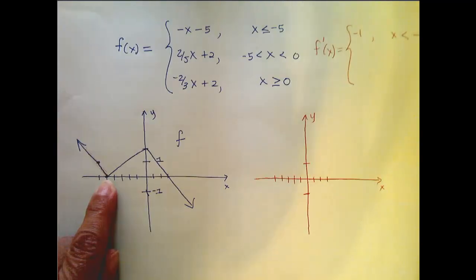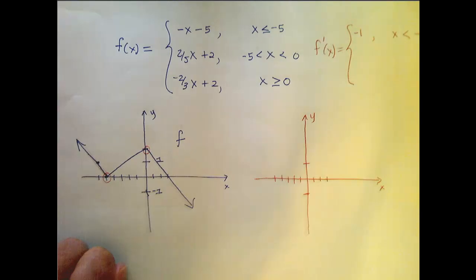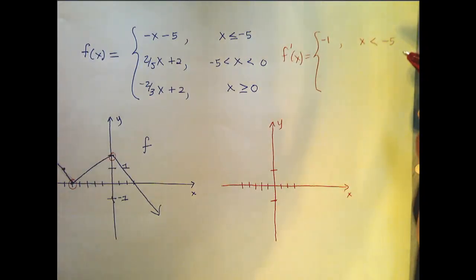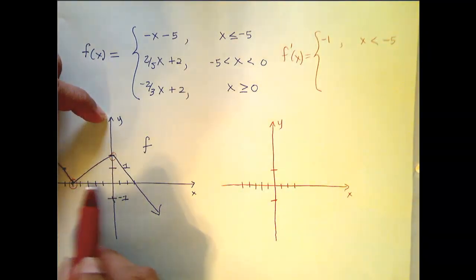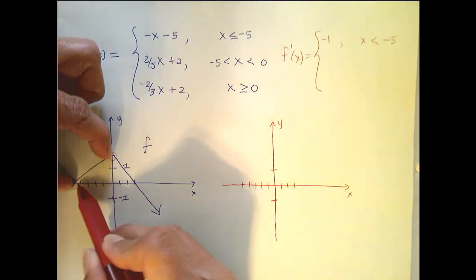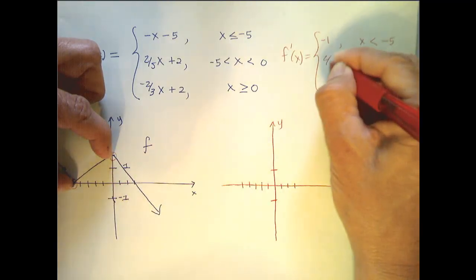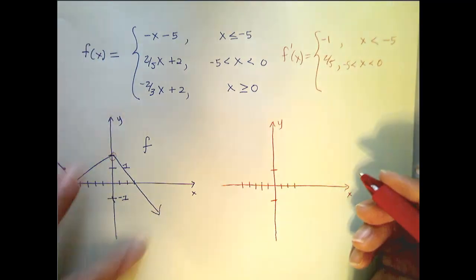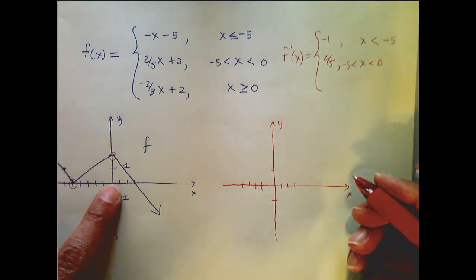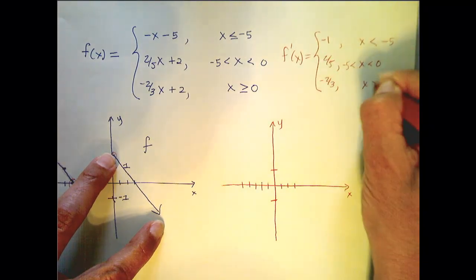Right here is an issue — this is our pointy point, which means there's no derivative here. The derivative for any x value between negative 5 and 0 is going to be the slope of this line, because every tangent line to this curve for these points is in fact the line itself. So it is 2 fifths for x between negative 5 and 0, and the slope of the tangent line for any point bigger than 0 will be negative 2 thirds for x bigger than 0.